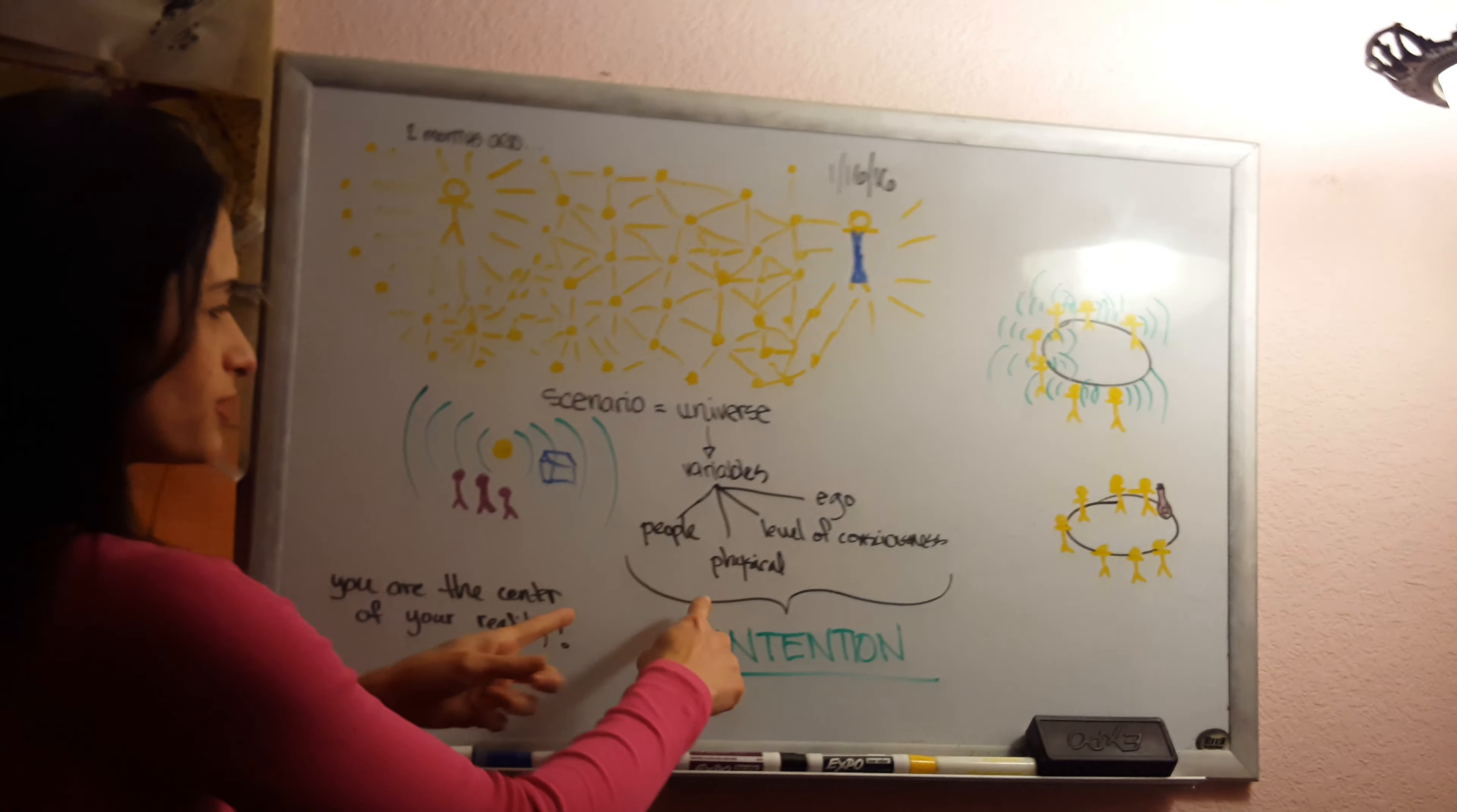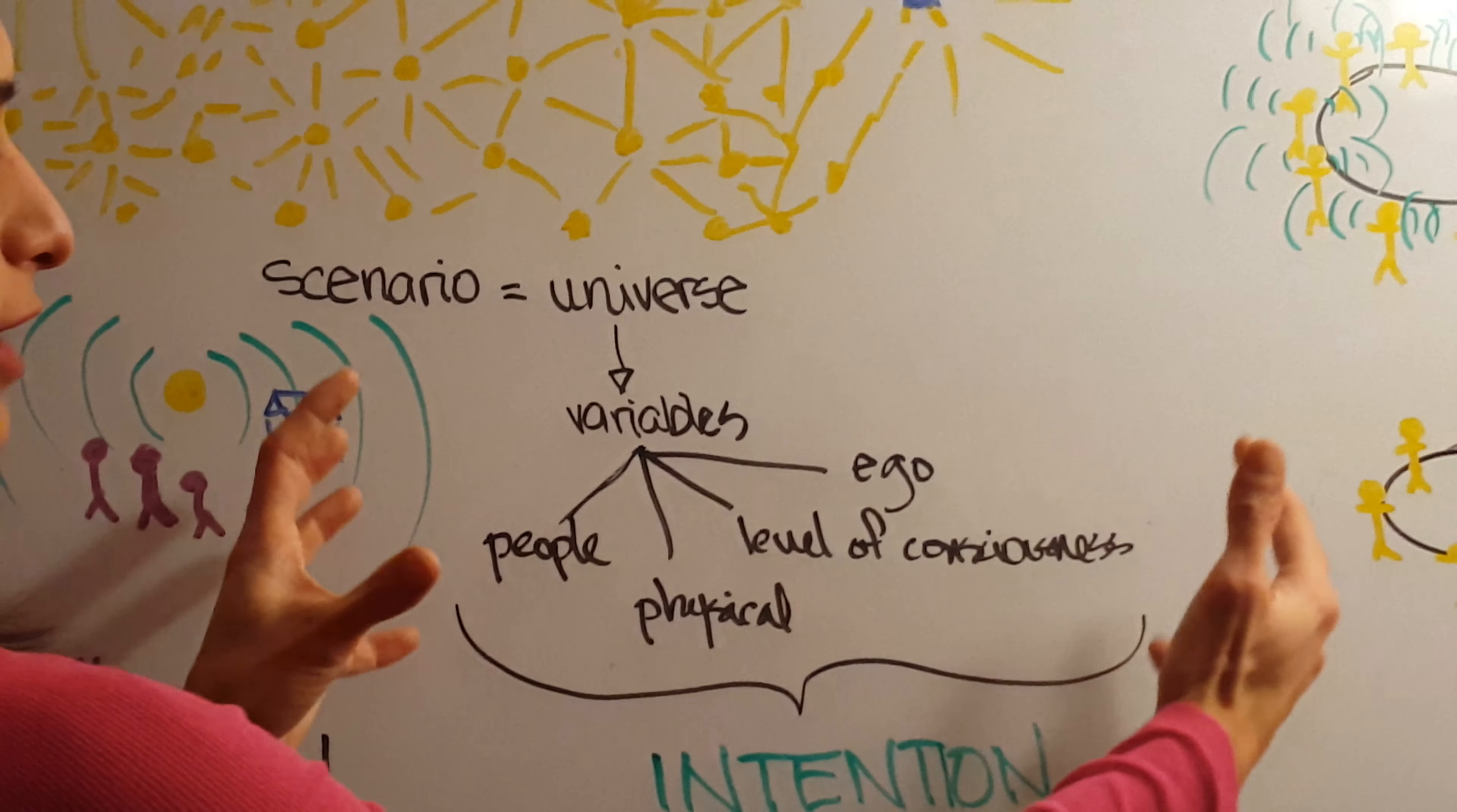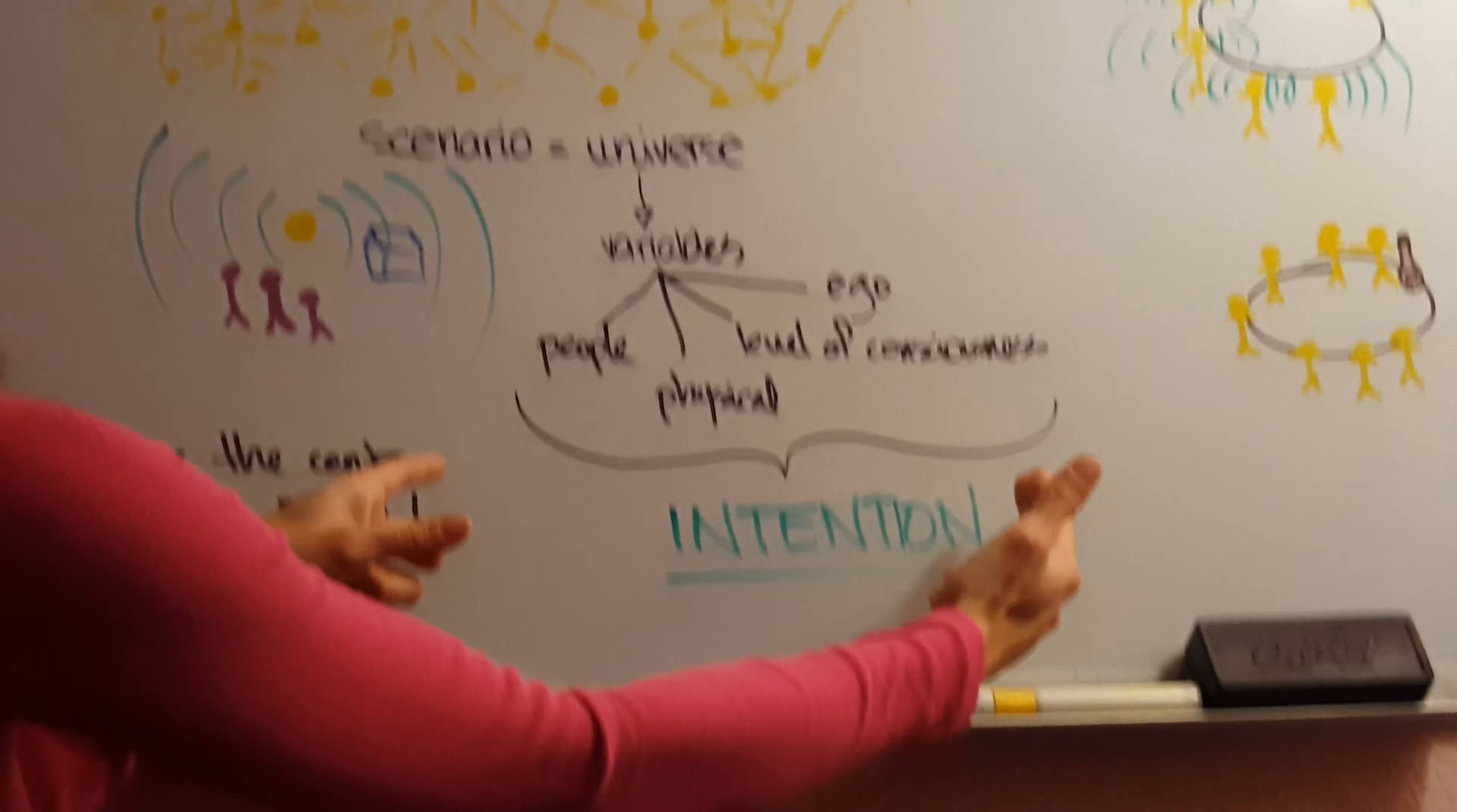Just to show this doodle here, the variables that make up your own universe are the people around you, the physical things, everything around you is driven by your intention. And these variables change based on your intention.